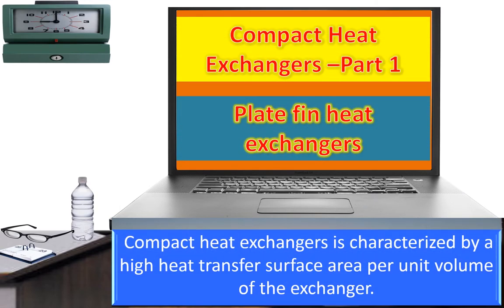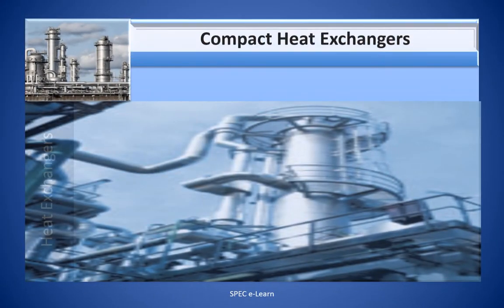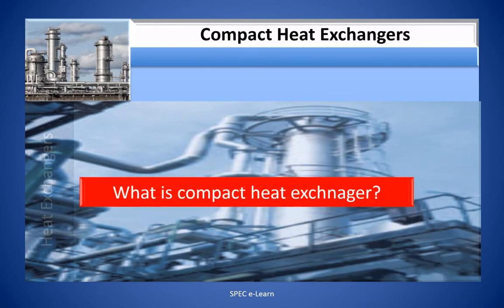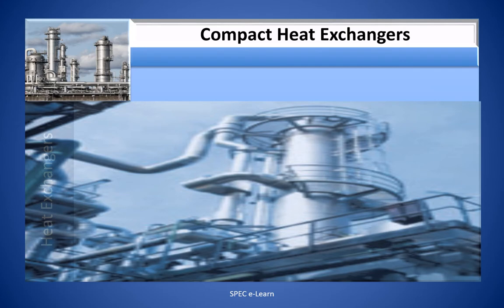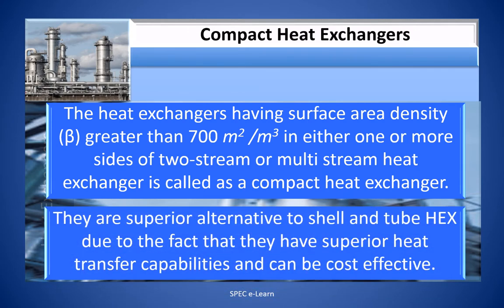A compact heat exchanger is characterized by high heat transfer area per unit volume. Specifically, heat exchangers having a surface area density greater than 700 square meters per cubic meter in either one or more sides of a two-stream or multi-stream heat exchanger are called compact heat exchangers.